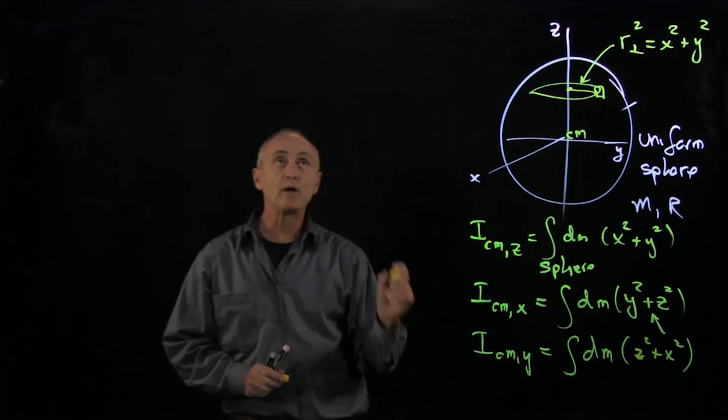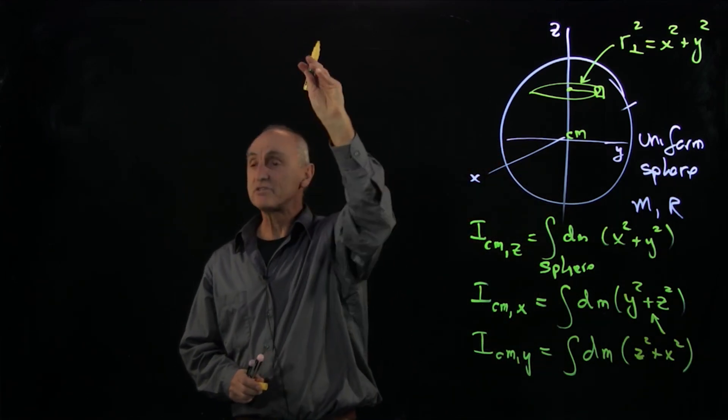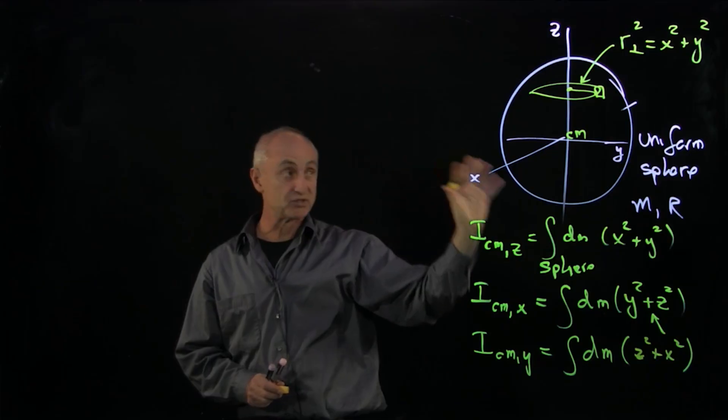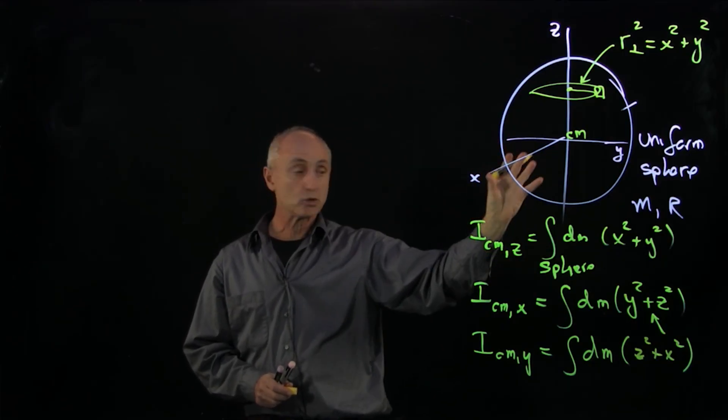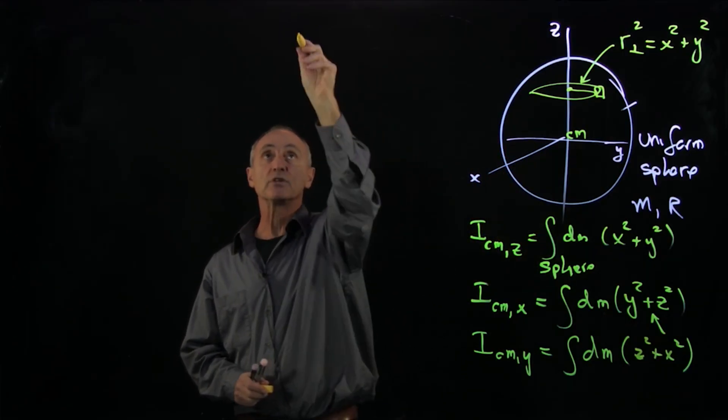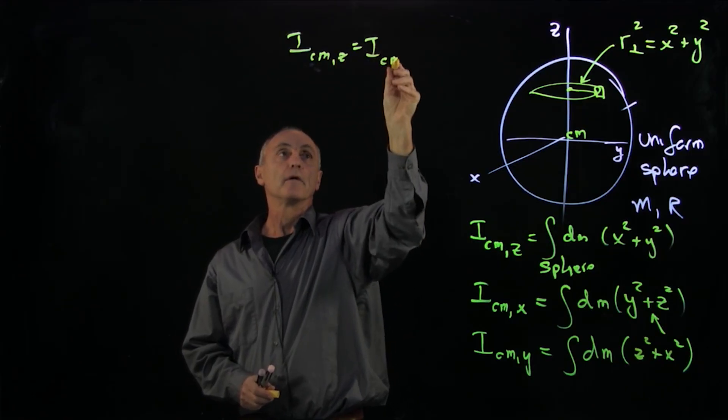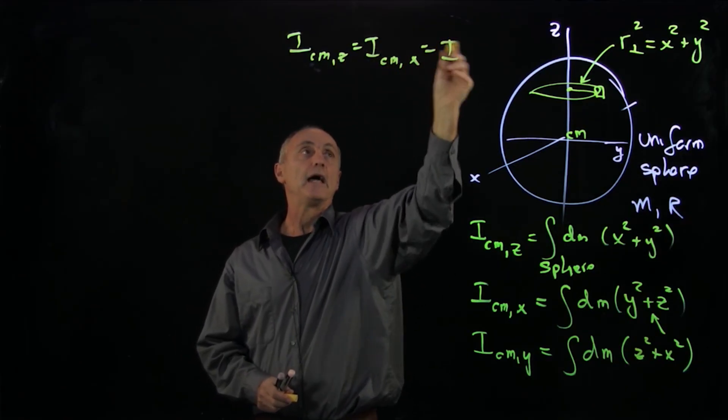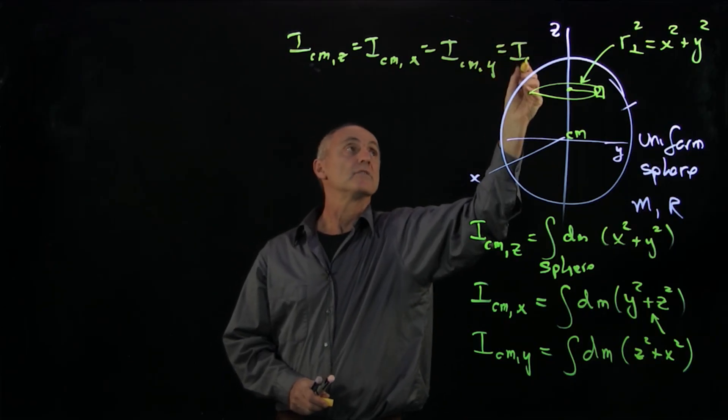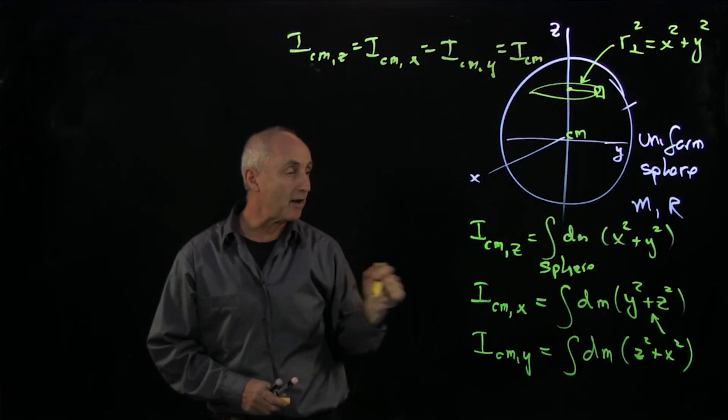Now, the beauty of this problem, and in physics when we talk about beauty, we often talk about symmetry, is that by the symmetry of the sphere, all of these moments are equal. And let's call that I_cm.